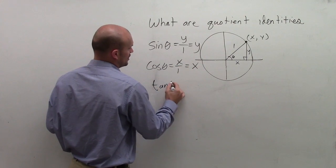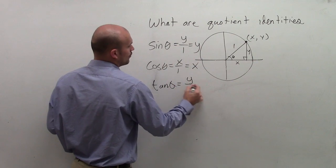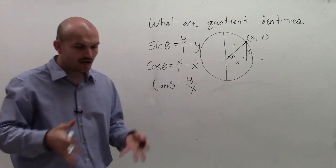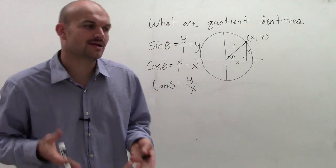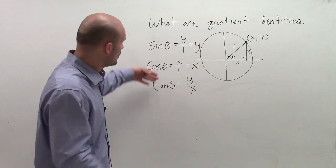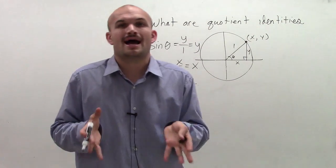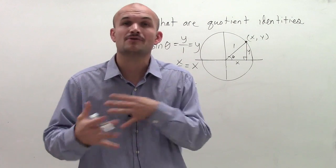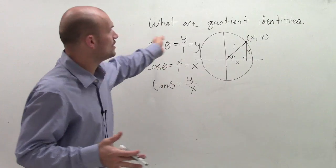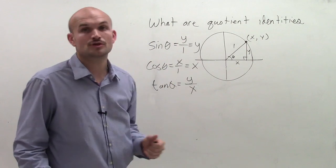And tangent of theta equals y over x. So we're talking about quotient identities. What I want to do is get a different relationship. Rather than dealing with tangent as y over x, how do tangent, sine, and cosine relate to each other? One way to tell how they relate is by using the quotient identities.